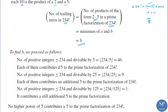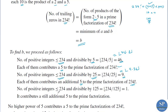To find b, we count the number of positive integers less than or equal to 234 divisible by 5: floor(234/5) = floor(46.8) = 46. Each of these contributes a factor of 5. Next, the number of integers divisible by 25: floor(234/25) = floor(9.36) = 9. Each of these contributes an additional 5 to the prime factorization of 234 factorial, giving 9 more 5s.